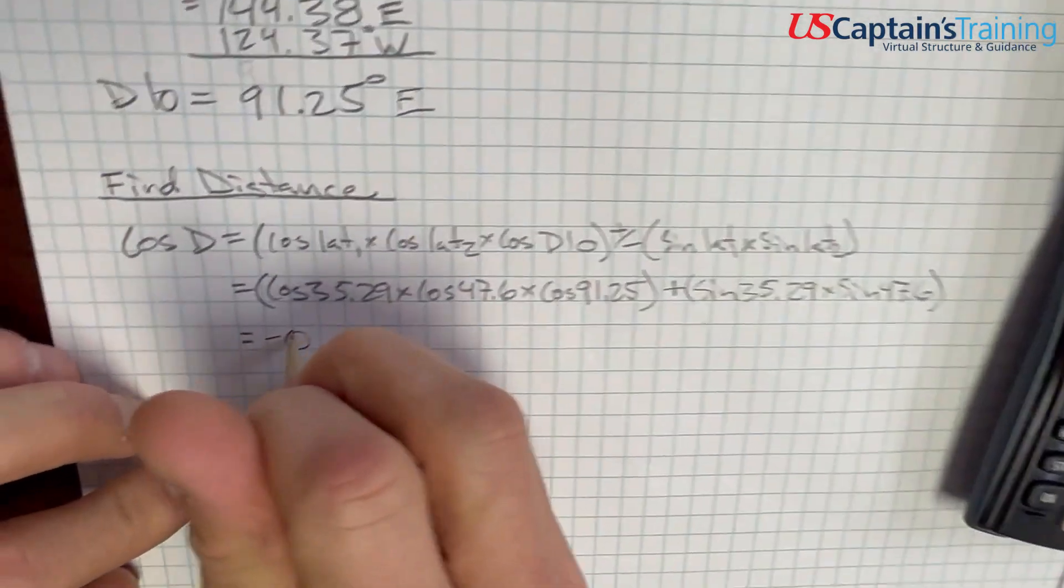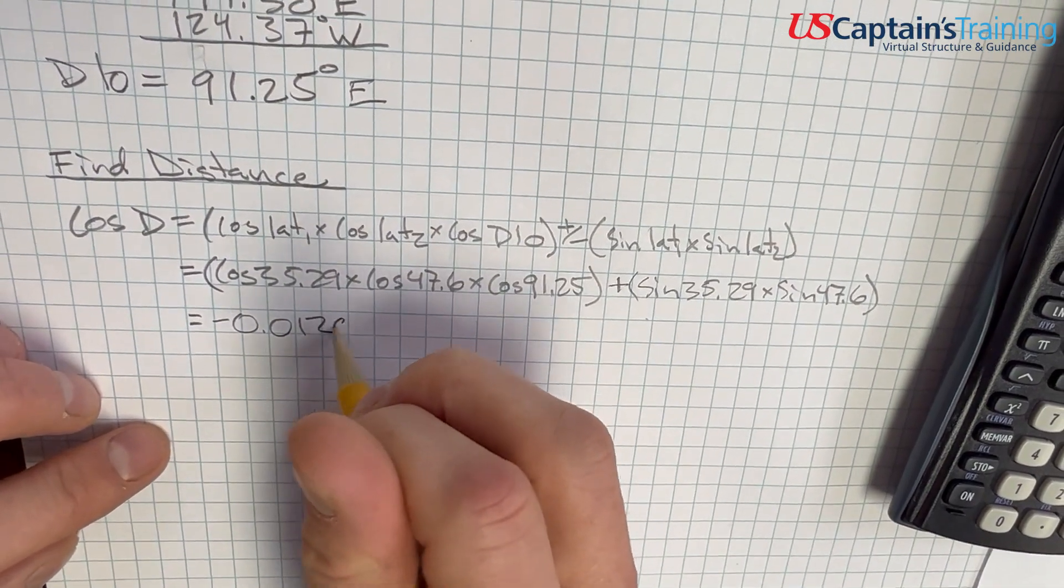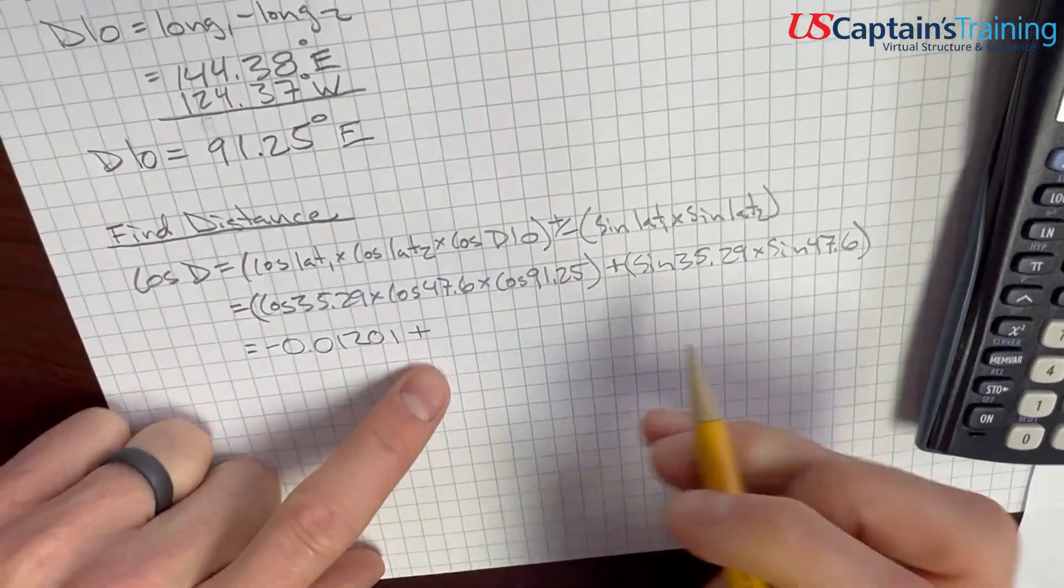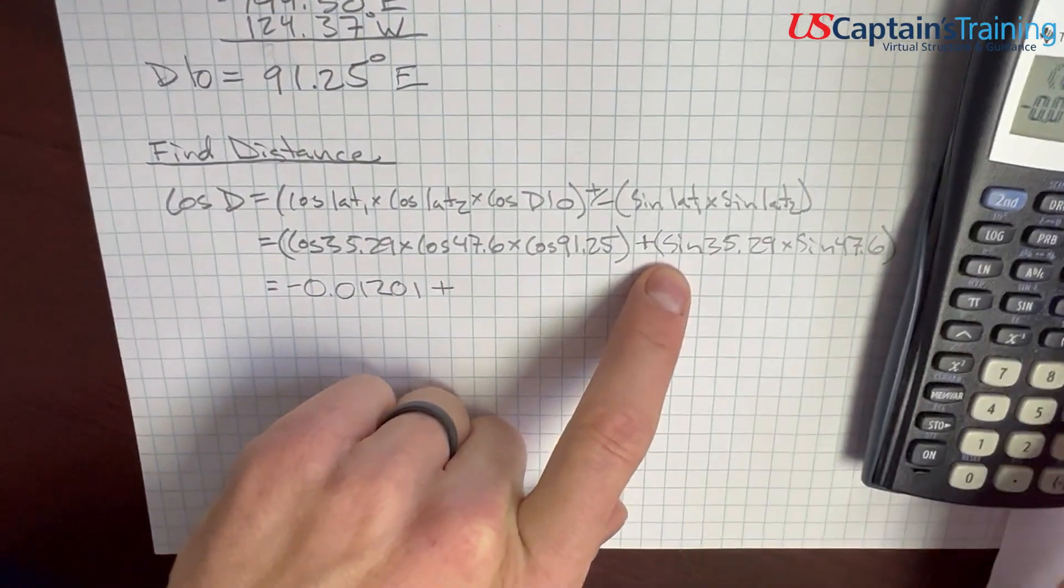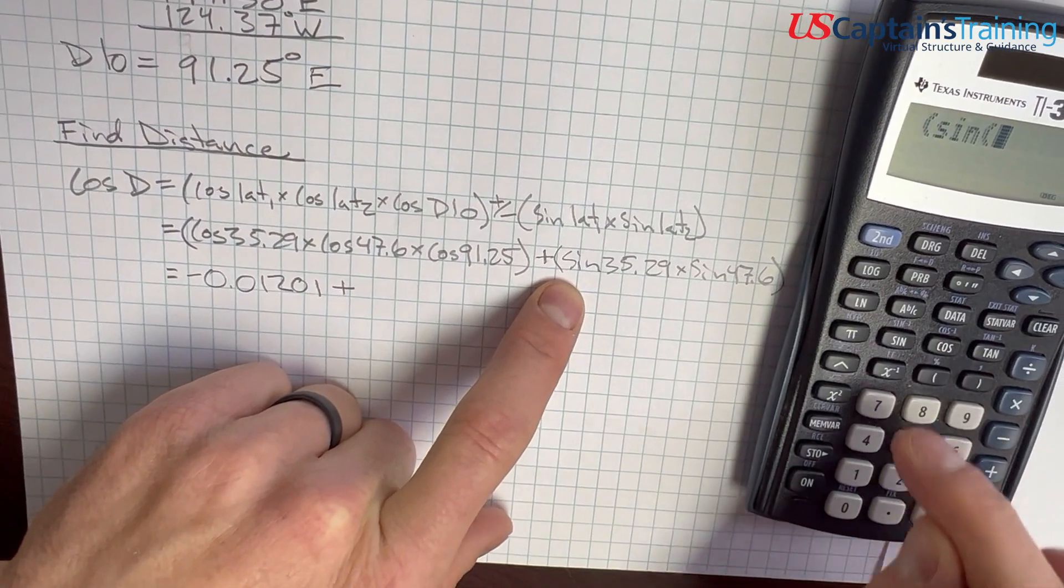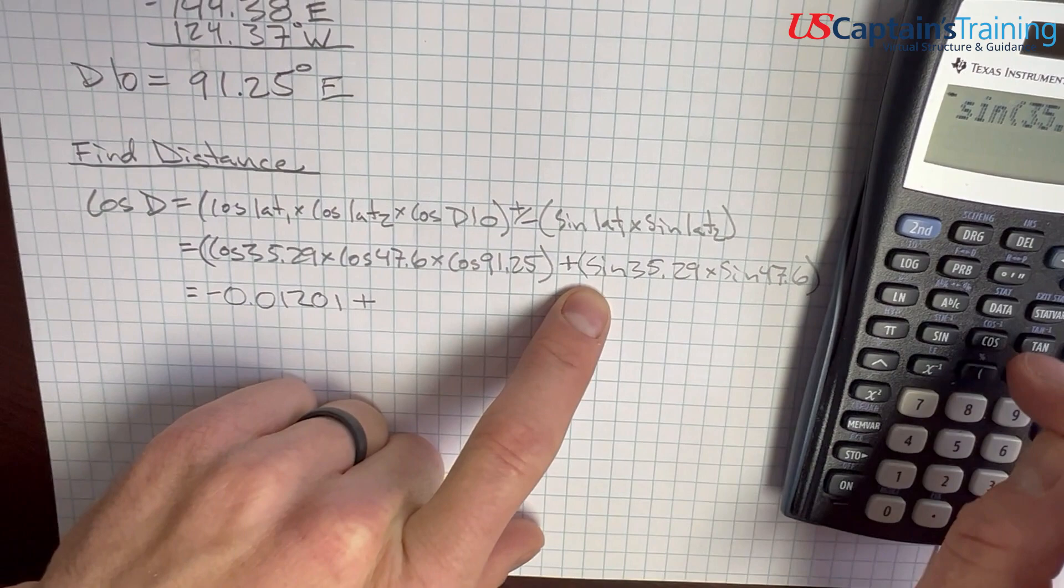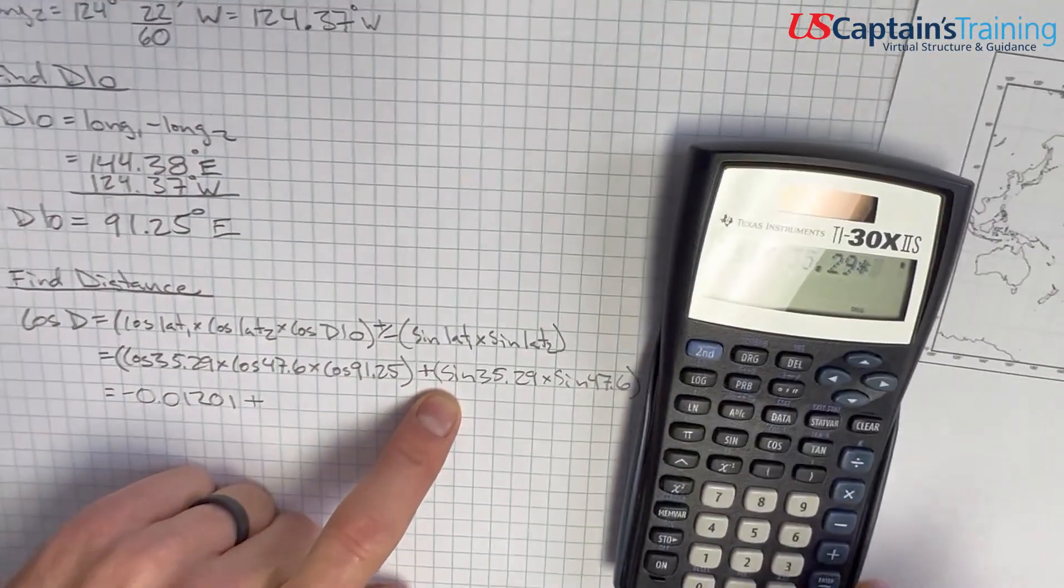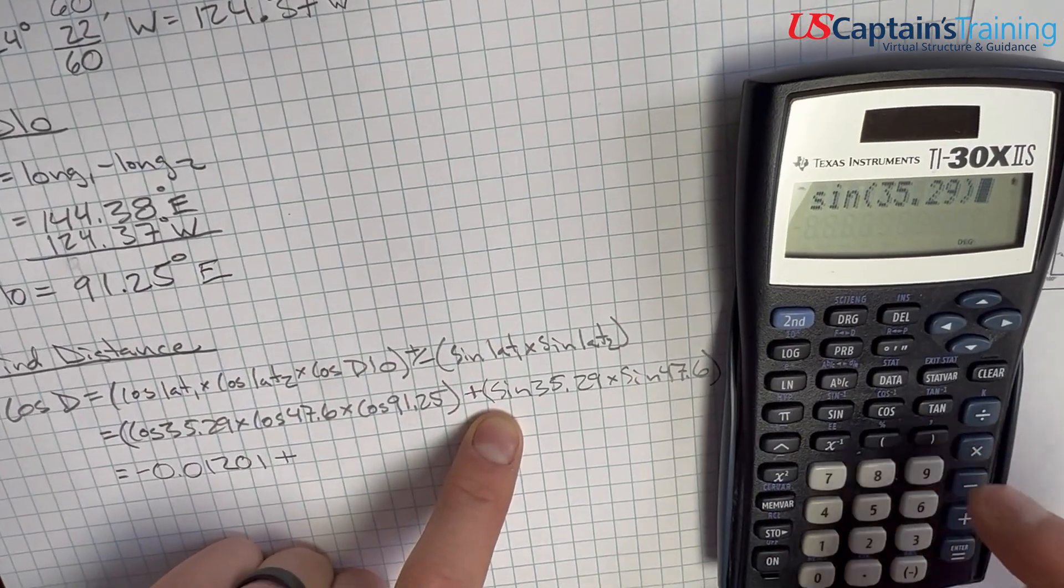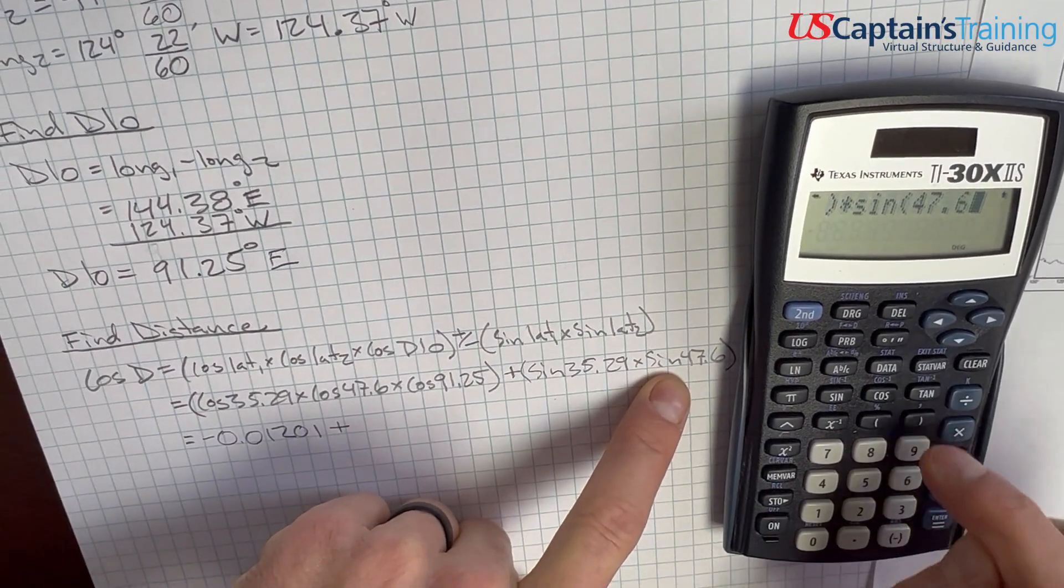So, negative 0.012, and so now, we add that to this side. So, let's figure out what number this side is. So, we say, we'll open the parenthesis and say, sine 35.29 times sine 47.6, close, close, equals 0.42662.